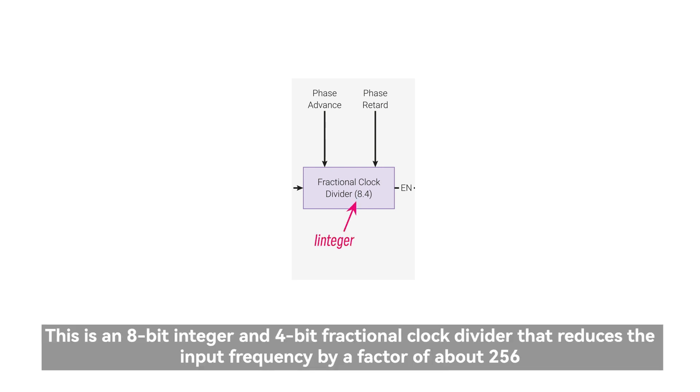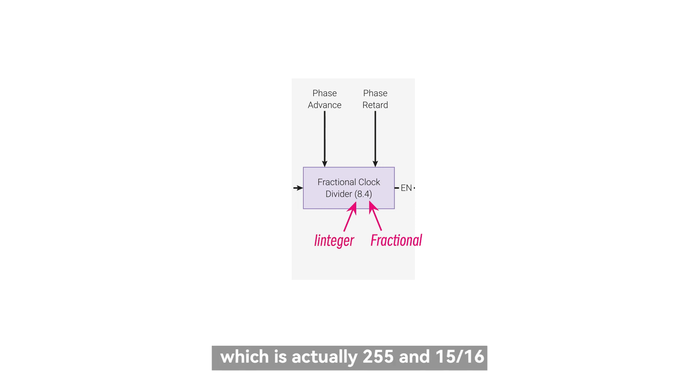This is an 8-bit integer and 4-bit fractional clock divider that reduces the input frequency by a factor of about 256, which is actually 255 and 15 sixteenths.